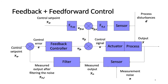This is a block diagram of a feedback plus feedforward control system. Here, while feedforward control eliminates the effects of measurable disturbances, feedback control corrects for unmeasurable disturbances and modeling errors.